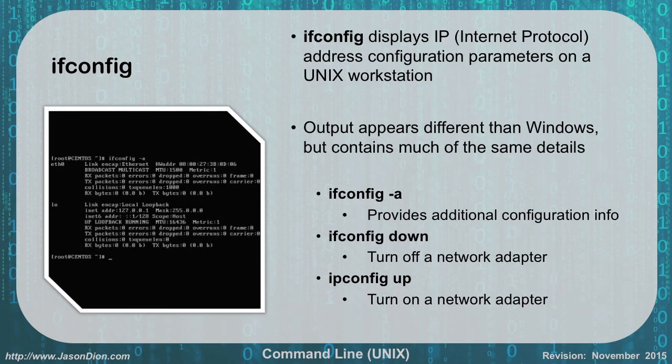IFConfig works exactly like the Windows version for finding network information. The difference is that in Windows it's called IPConfig, while in Linux and Unix it's called IFConfig, which stands for Interface Config. It displays your IP information based on the parameters for your Unix workstation. Using 'ifconfig -a' provides additional information, similar to the '/all' switch in Windows.